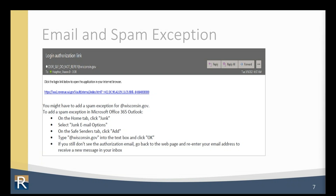If you have problems accessing MyDORGov, try accessing it using another browser. For example, if you have issues using Edge, try using Chrome. If you want to access the system using Chrome but the email with the link is in Microsoft Outlook, copy and paste the link into the Chrome browser rather than just clicking the link.